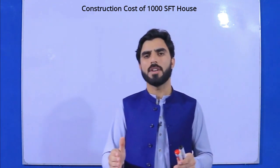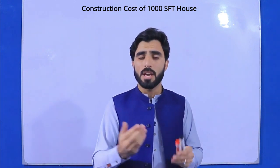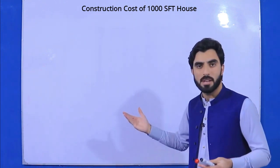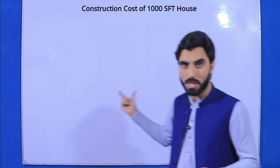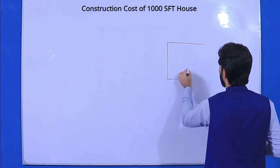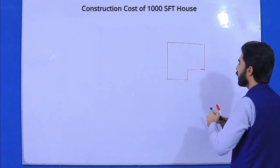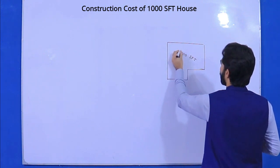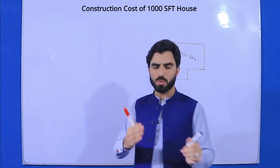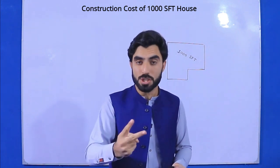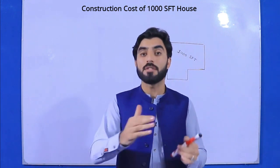What is the construction cost of a house for one square foot of covered area? Whether you have a 1000, 1500, or 2000 square feet house, you can use the rates I am providing in this video. We can construct a house in two main stages: one is gray structure, and the second is full design from start to finish.